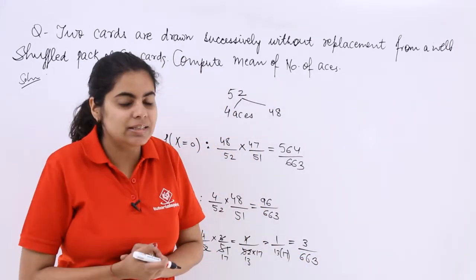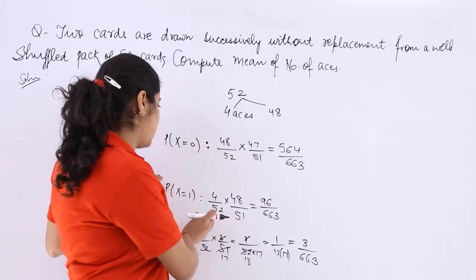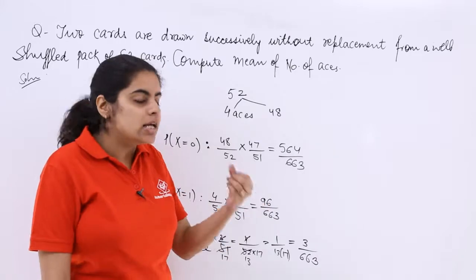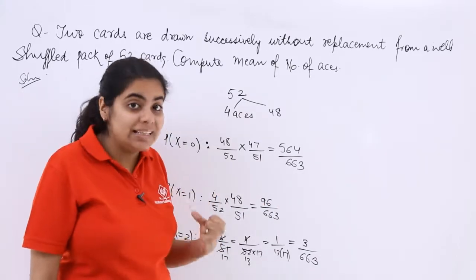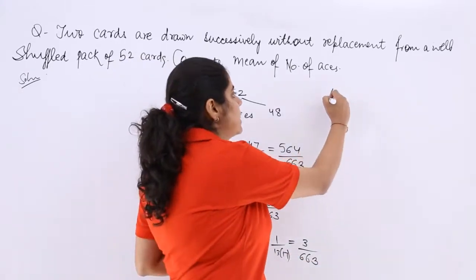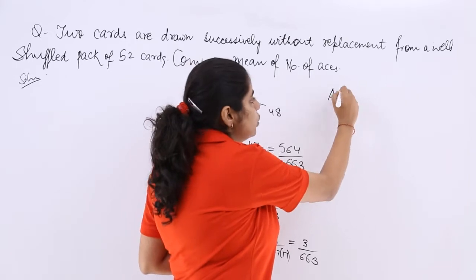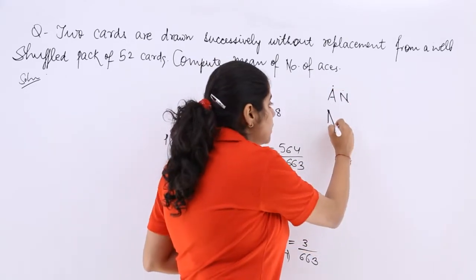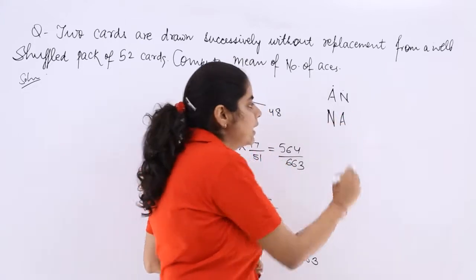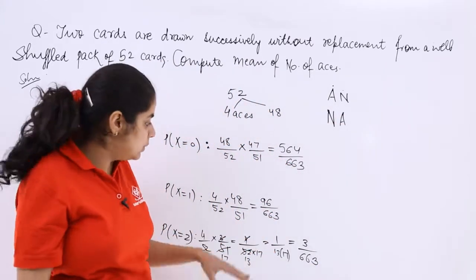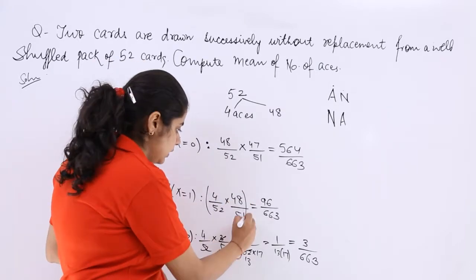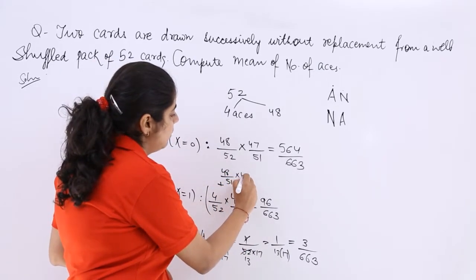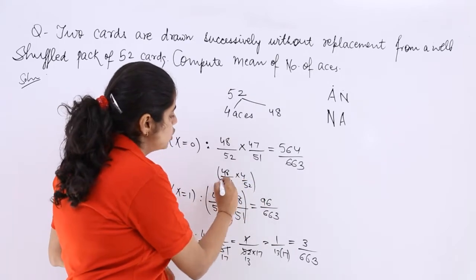Now there is one more thing that is very much essential. X equals 1 means it can happen that first card has ace, the second card has no ace, so A is ace and N is no ace, or the first card is not from aces but the second is from aces that is also possible. So this is not the only complete answer. This plus again 48 over 52 multiply by 4 over 51. This will also come.